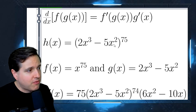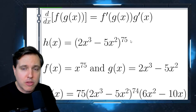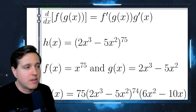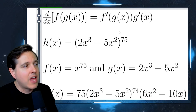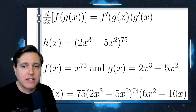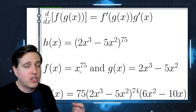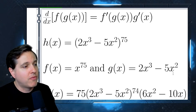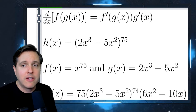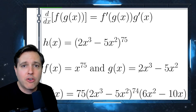Here we've got the function (2x³ - 5x²) raised to the 75th power. If you were going to evaluate this, you wouldn't take the 75th power first — you'd have to evaluate the inside first. That makes the inside the inner function. You do that and then raise it to the 75th power. So the thing in parentheses is our inner function, g(x), and the thing on the outside — raising to the 75th power — is our outer function, f(x).